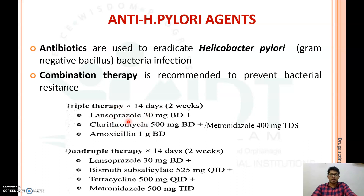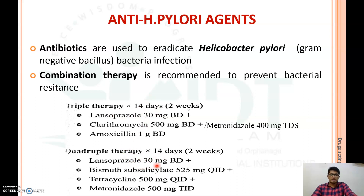In triple therapy, lansoprazole (a proton pump inhibitor) is given at 30 mg twice daily, along with clarithromycin 500 mg BD or metronidazole 400 mg TID or tinidazole, and amoxicillin 1 gram BD. This triple therapy regimen is used for 14 days.